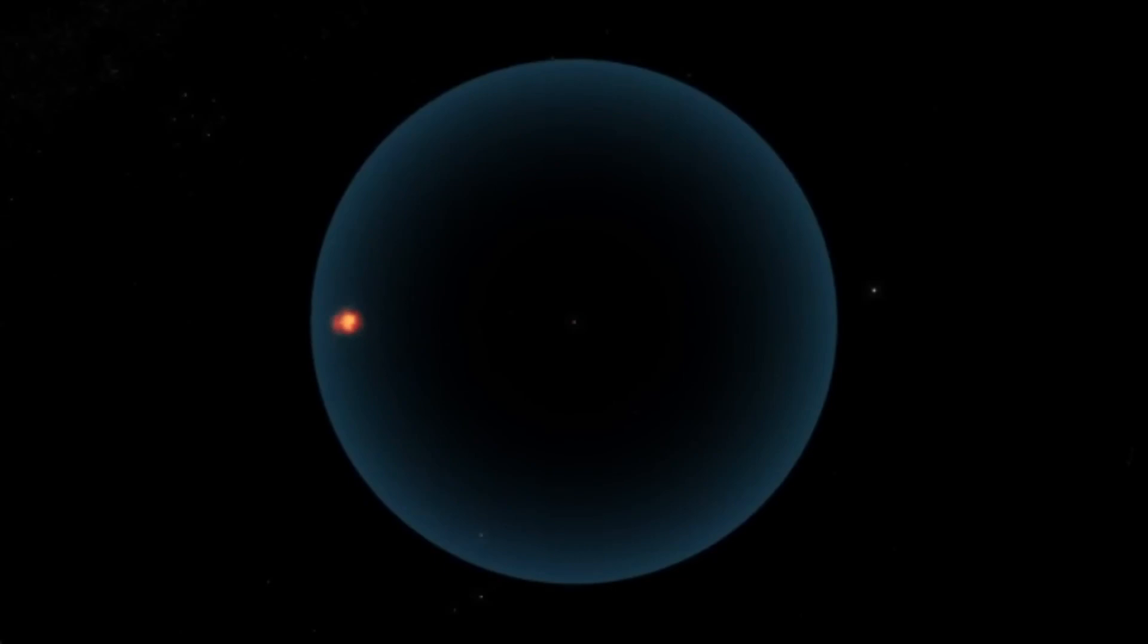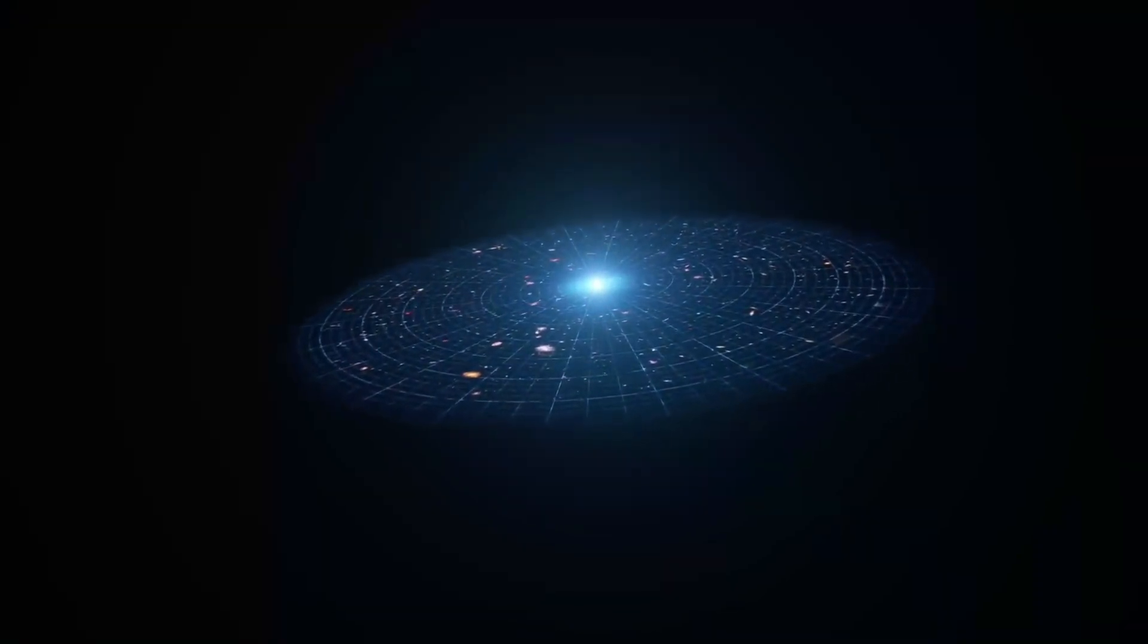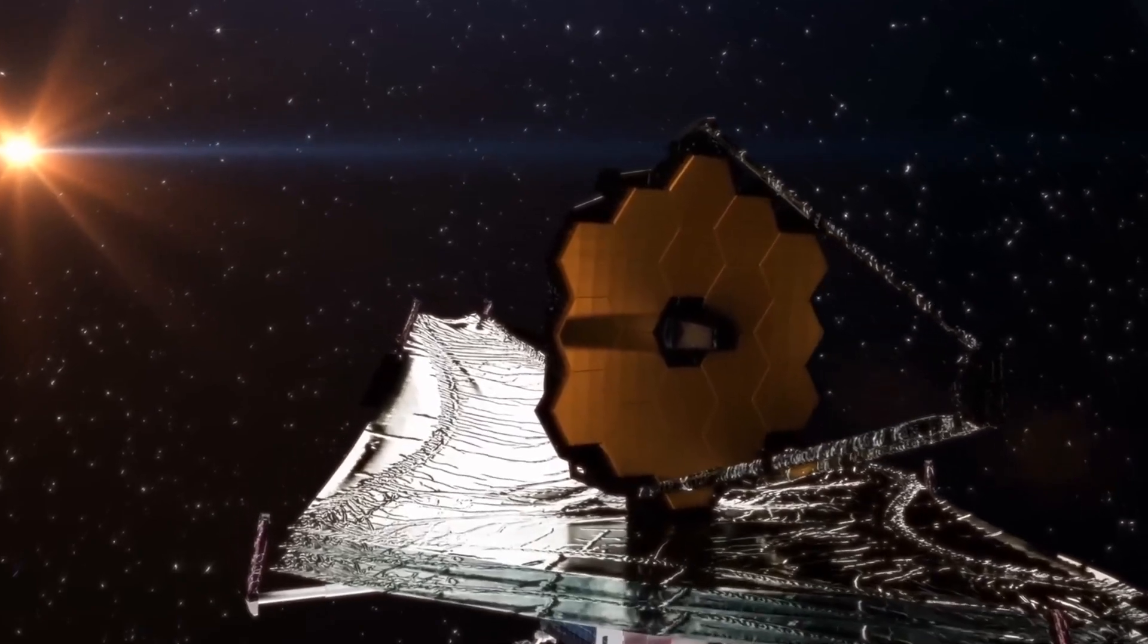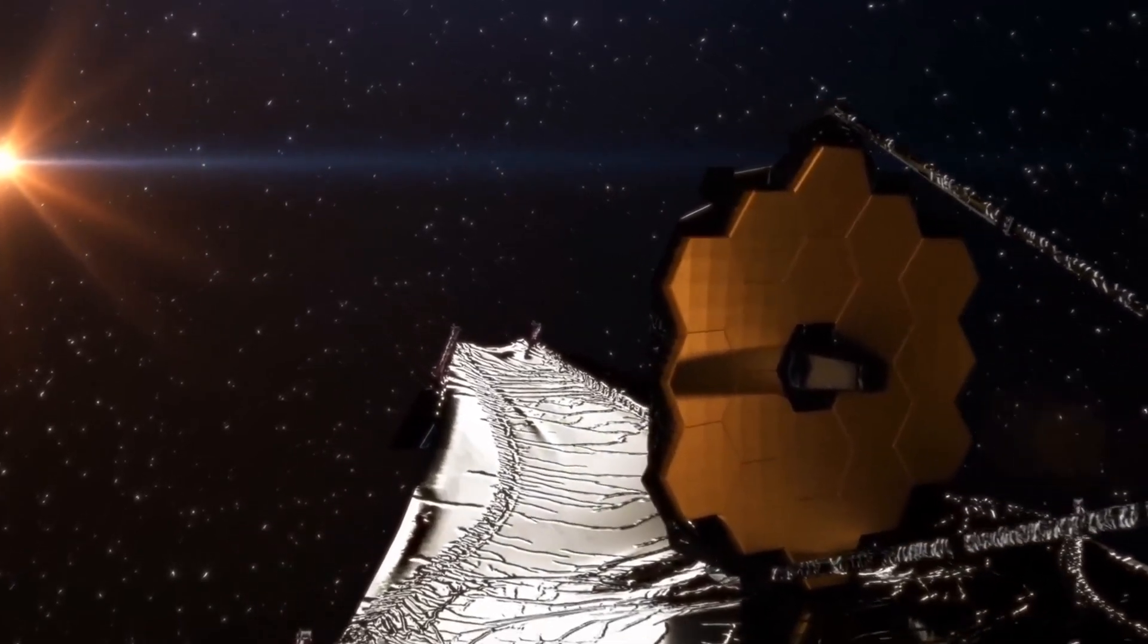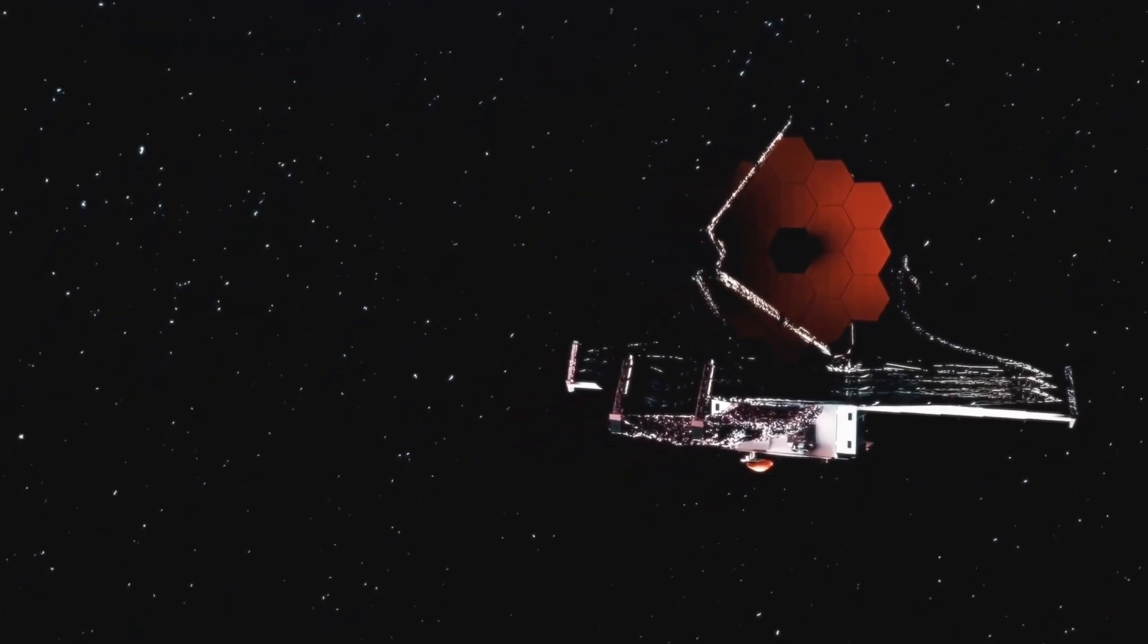Even the farthest galaxies detected by JWST, such as the famous Macy's galaxy estimated to have formed just 450 million years after the Big Bang, exist within this sphere. But here's the twist: the universe is expanding. As it does, the Hubble sphere grows larger, making it theoretically possible for objects currently beyond its boundary to become visible in the future.